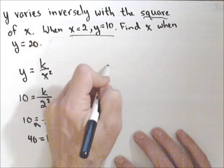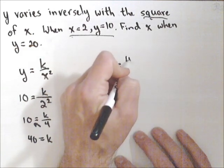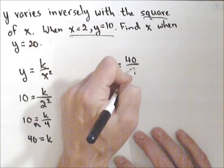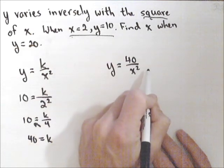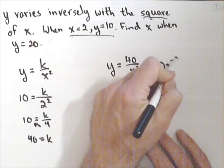And we now have a formula relating the two. So we have a function, which is actually a power function. So y equals 40 over x squared, and to see it as a power function, I could, if I wanted to, write it as 40x to the minus 2.